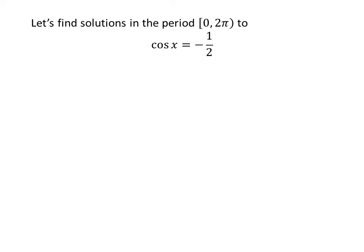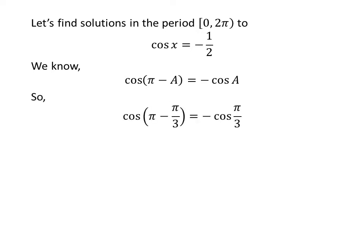Now let us find the solutions to the equation cosine of x is equal to minus half in the interval 0 to 2 times pi. We know the famous trigonometry identity cosine of pi minus a is equal to minus cosine of a. Application of this identity implies that cosine of pi minus pi upon 3 is equal to minus cosine of pi upon 3. As pi minus pi upon 3 is equal to 2 times pi upon 3, cosine of 2 times pi upon 3 is equal to minus half.